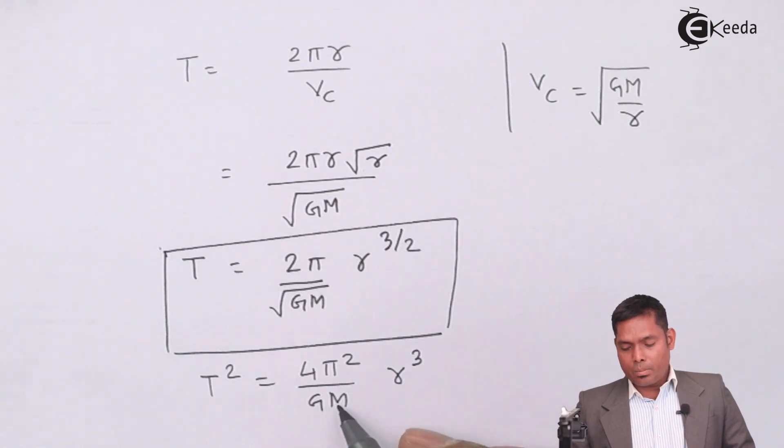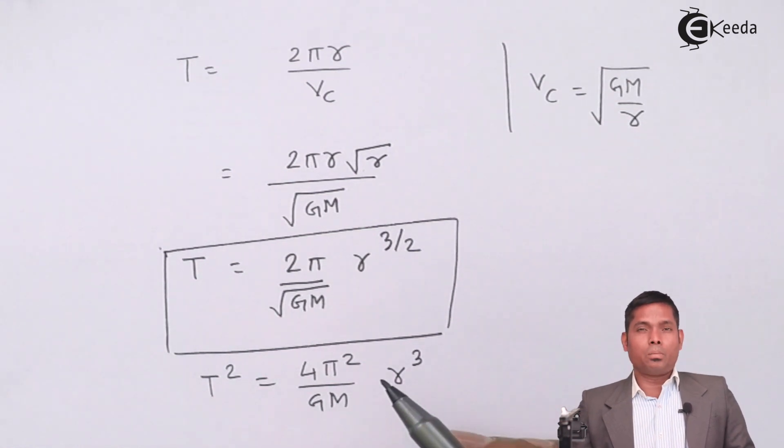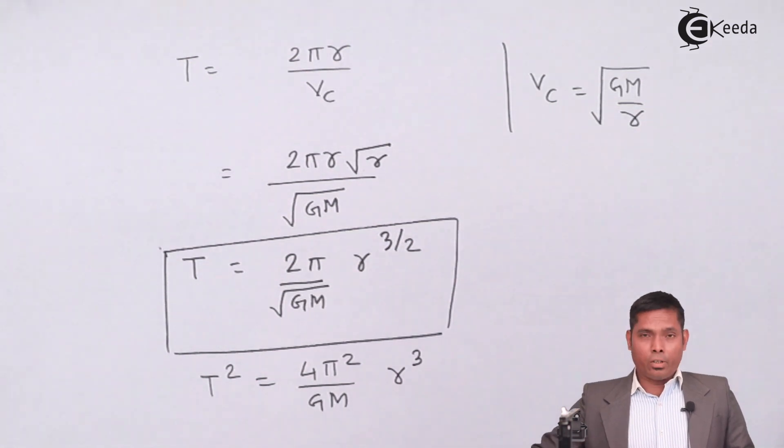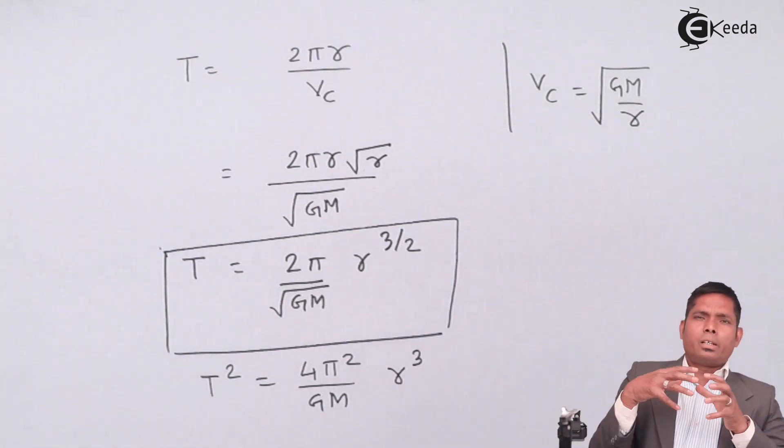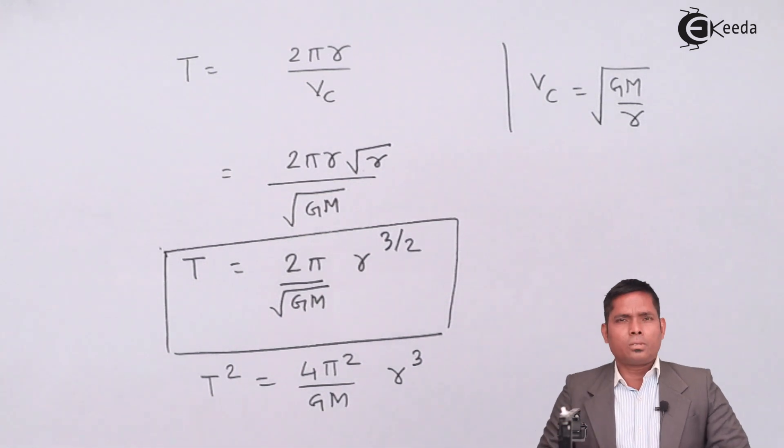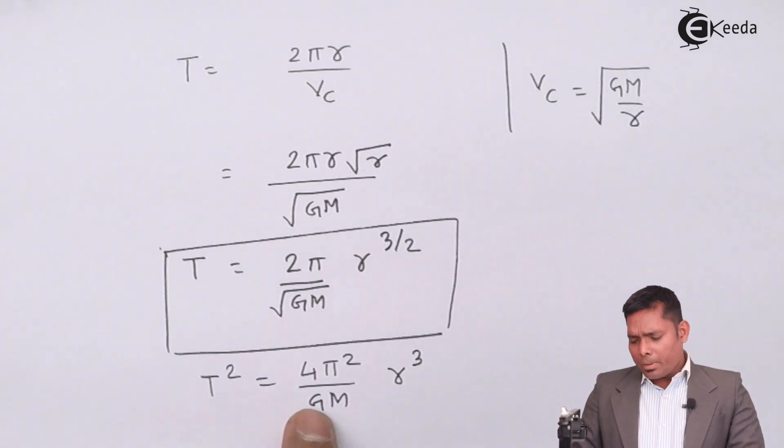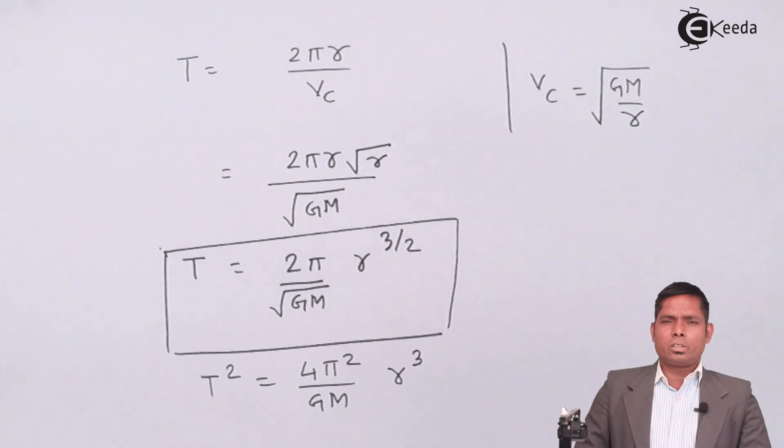Unless you change the mass of the planet, that means unless you change the planet, we have different satellites moving about a given planet, then this m is fixed. This capital G is fixed for any planet and any situations.